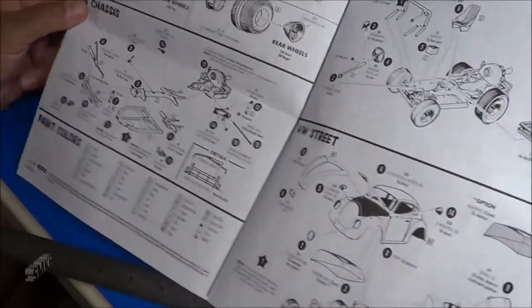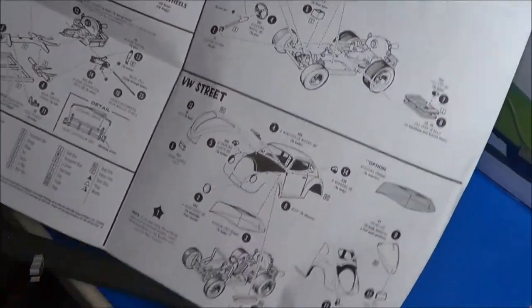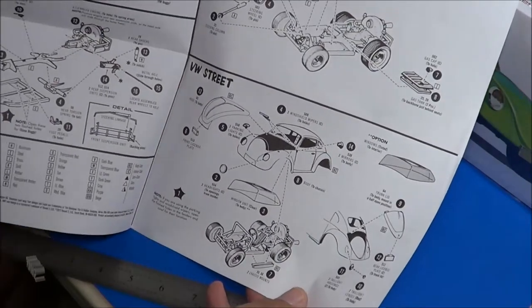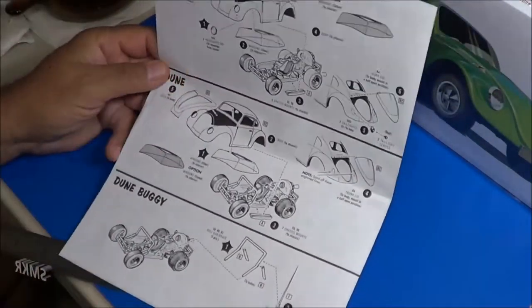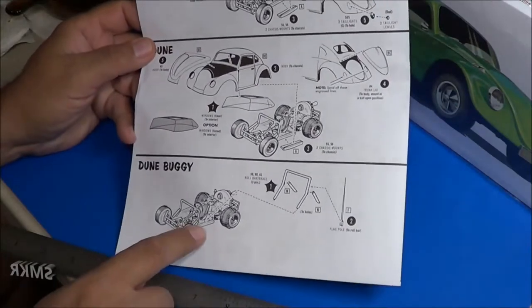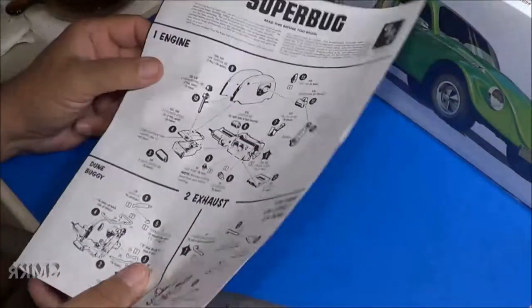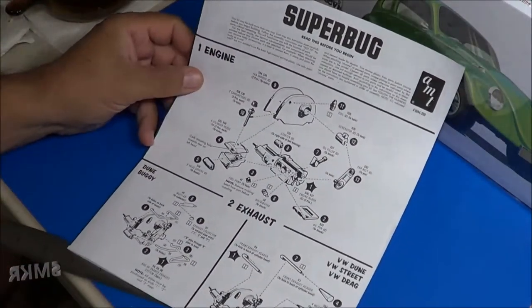Chassis, assembling the full chassis, it looks very much the part. Interior, making it either the VW Street version, or the drag version, and or the dune buggy. So we'll go over the parts and we'll talk a little bit more about this kit.